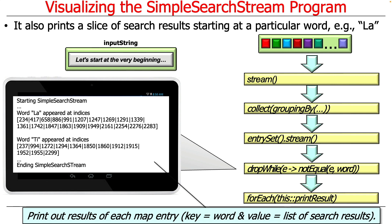We're also going to demonstrate some other features in modern Java, such as the ability to do slicing. This will allow us to search for certain words like "la" and see where it appears at which indices. We'll just take a slice of the results, and we'll talk about how to do this using a few other cool intermediate operations in Java streams like dropWhile and takeWhile.